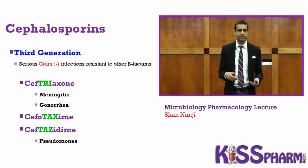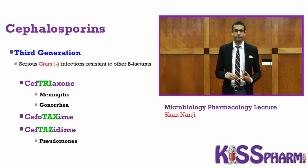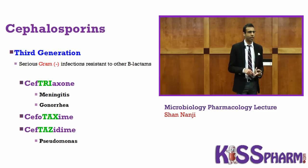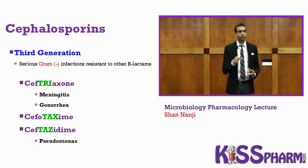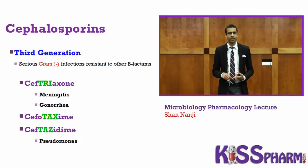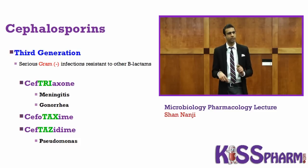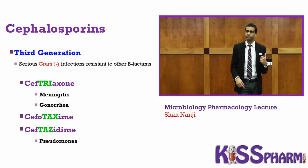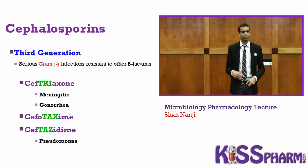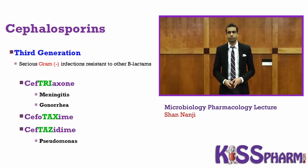Try, Tax, Taz — it's all infections. For meningitis and gonorrhea, we use ceftriaxone — that's the 'Try' sound. For Pseudomonas, the best is 'Taz.' So: meningitis and gonorrhea — Try; Pseudomonas — Taz.